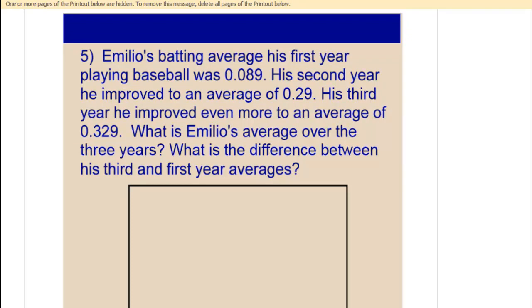For number five, we read that Emilio's batting average his first year playing baseball was 89 thousandths. His second year, he improved to an average of 29 hundredths. His third year, he improved even more to an average of 329 thousandths.